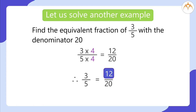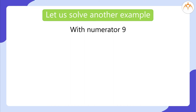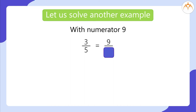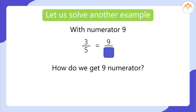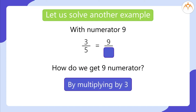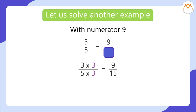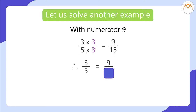Let us solve one more example with numerator 9. 3 divided by 5 is equal to 9 by blank. How do we get 9 as the numerator? By multiplying by 3. 3 multiplied by 3, by 5 multiplied by 3, is equal to 9 by 15. Therefore, 3 by 5 is equal to 9 by 15.